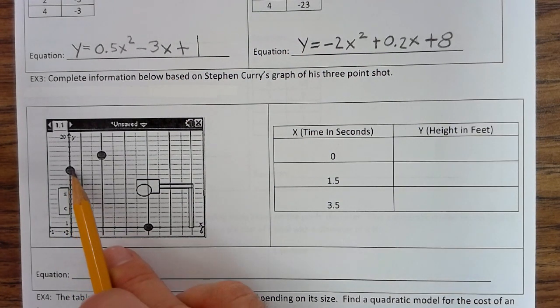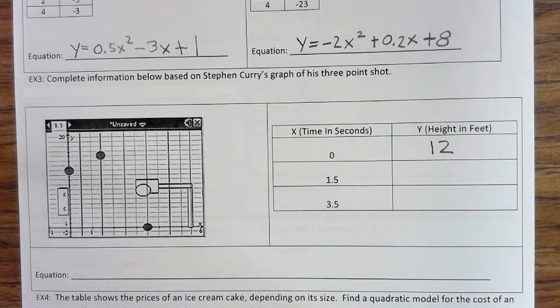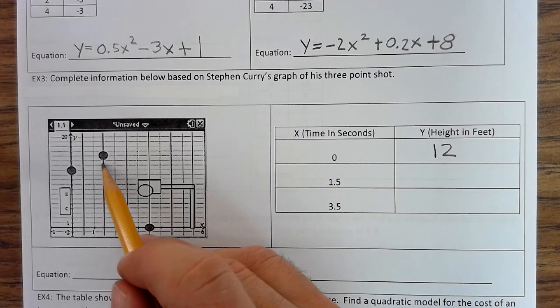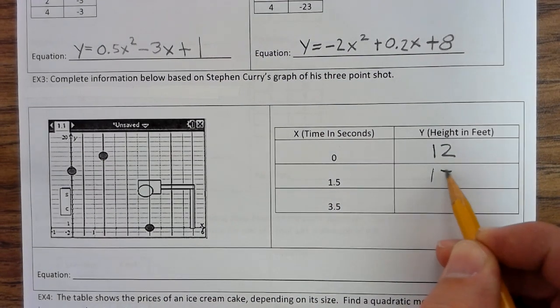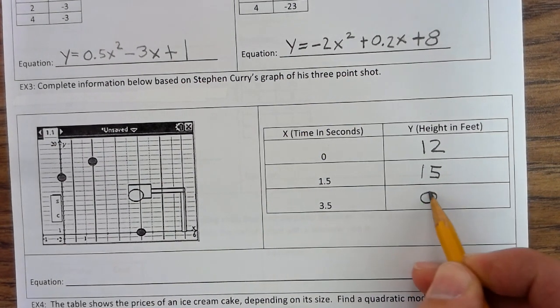8, 9, 10, 11, 12 feet high. After it released, it's 13, 14, 15 feet high. And then when it hits the ground, it's 0 feet high.